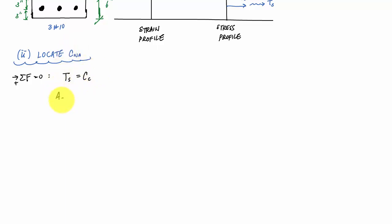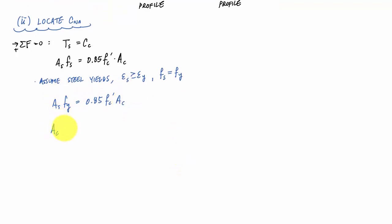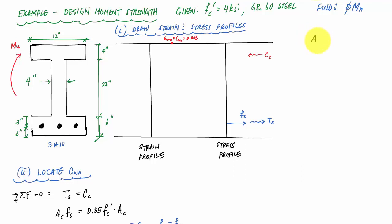Setting up the equilibrium: the tension force is AS·FS and the compression force is 0.85·f'c times the area in compression AC. I'll make the assumption that the tension reinforcement yields, meaning the strain in the steel is greater than or equal to εy, so the stress equals FY. With that substitution: AS·FY = 0.85·f'c·AC. Solving for the required compression area AC, I plug in numbers: three number 10 bars, where the area of a number 10 bar is 1.27 in².